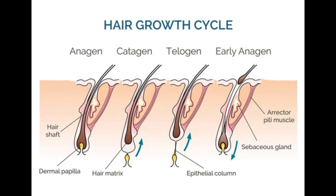Those hairs only grow for about 100 to 150 days, so they can't get that long. At the end of the growth phase, the hair root separates from the papilla. Then a transitional phase called the catagen phase starts, lasting about two to four weeks. When the hair has separated completely from the papilla, the supply of blood is cut off. In the final resting phase — called the telogen phase — the hair is gradually pushed out of the skin and eventually falls out. The resting phase can last several months.